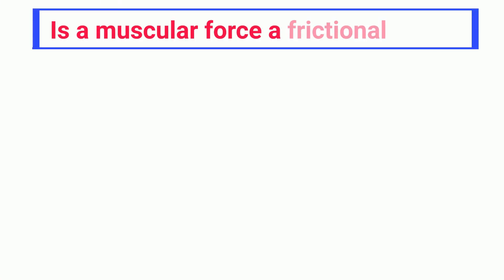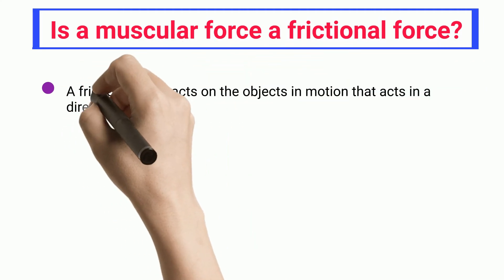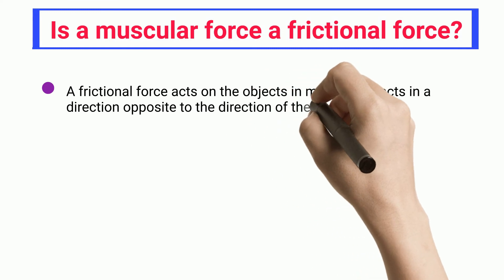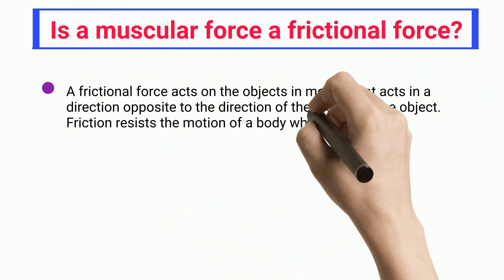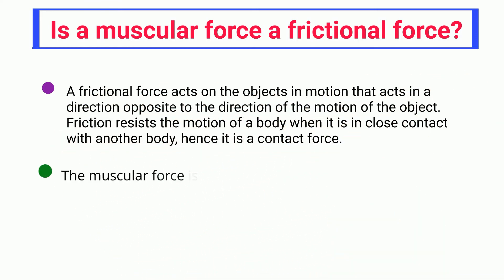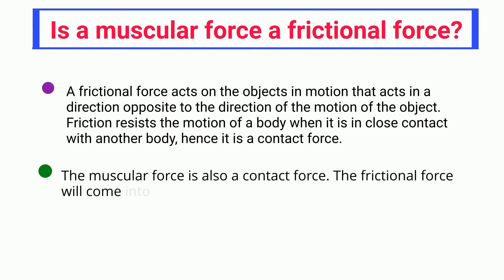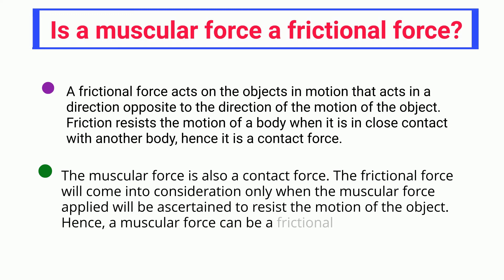Is muscular force a frictional force? A frictional force acts on objects in motion in a direction opposite to the direction of motion. Friction resists the motion of a body when it is in close contact with another body, hence it is a contact force. Muscular force is also a contact force. Frictional force comes into consideration only when the muscular force applied is resisting the motion of the object. Hence, a muscular force can be a frictional force too.